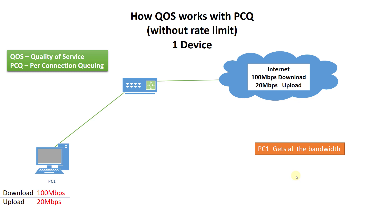PCQ stands for Per Connection Queuing and what this does — it works in conjunction with QoS and it breaks the traffic into queues. When it breaks the traffic into queues it allows better bandwidth management and parameters to be set based on the traffic.